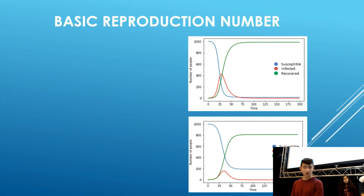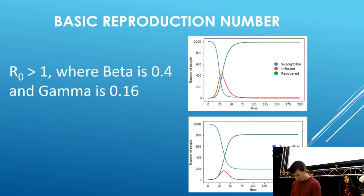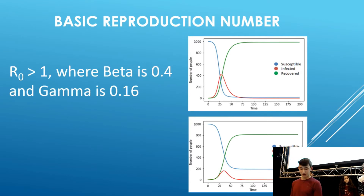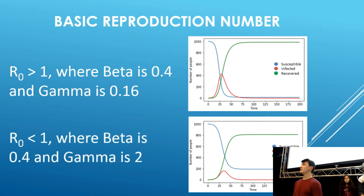The basic reproduction number is a combination of beta and gamma. This shows how many people, on average, a single person will infect. If beta represents contacts resulting in new infections and gamma is the mean infectious period, the basic reproduction number equals beta divided by gamma. When the basic reproduction number is greater than 1, the disease will spread throughout the population — this is an example graph where R0 is greater than 1. When the basic reproduction number is less than 1, the disease will die out before all susceptible individuals are infected — this is an example graph where R0 is less than 1.